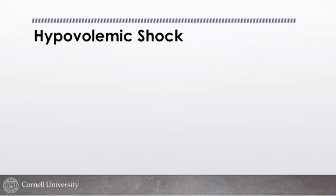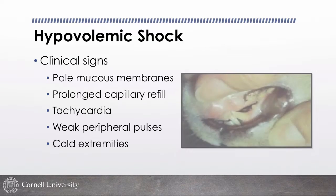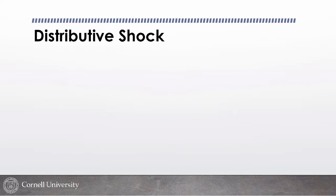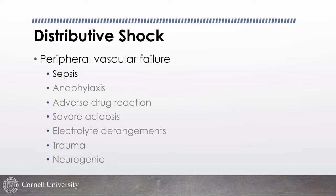Hypovolemic shock clinically: most of us are comfortable with these signs. In the moderate-to-severe category they'll be pale, have a prolonged capillary refill time, be tachycardic, have weak peripheral pulses, and cold extremities. This is the easily recognized presentation. Distributive shock is a little different — that failure of the peripheral vascular circuit — and there are lots of causes, but by far the most common is sepsis.